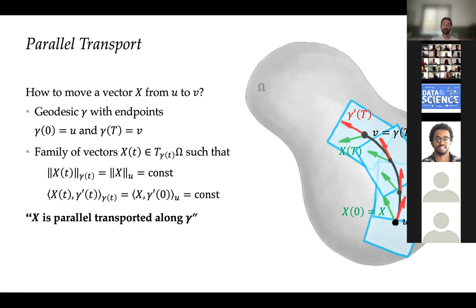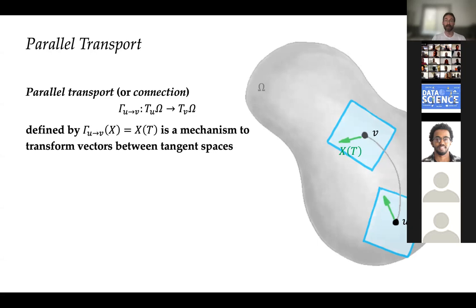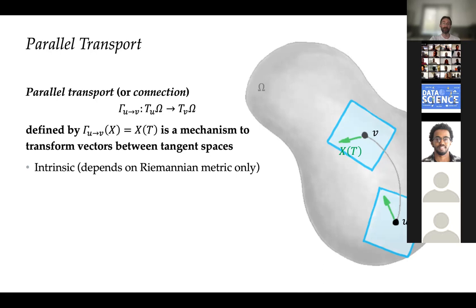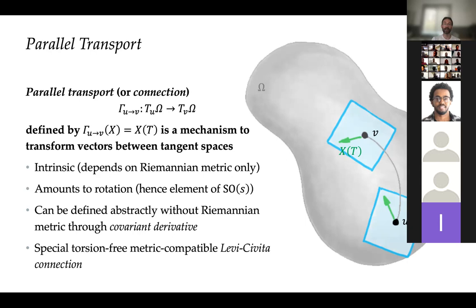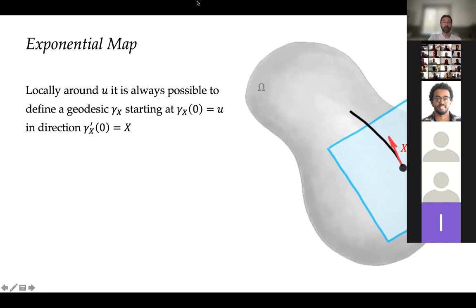Parallel transport — sometimes called a connection — is a mechanism to transform vectors between tangent spaces. It is intrinsic because we define it through geodesics which depend on the Riemannian metric. On a Riemannian manifold, parallel transport amounts only to rotation — it is an element of the special orthogonal group. If you're familiar with differential geometry, parallel transport is defined abstractly through the covariant derivative. What we defined here is the Levi-Civita connection, which is torsion-free and compatible with the Riemannian metric, and a fundamental theorem establishes it is unique.